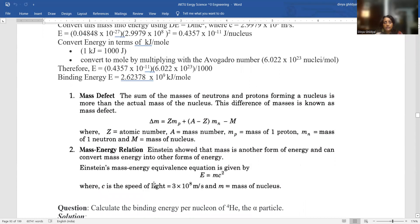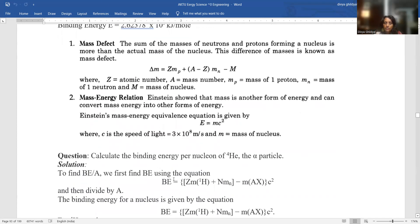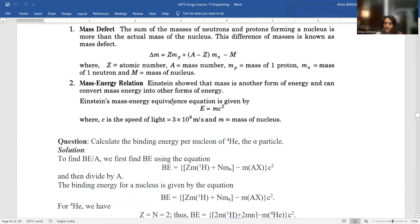Mass defect, the sum of masses of neutrons and protons forming a nucleus is more than the actual mass of the nucleus. This difference of masses is known as mass defect. The formula is del m is equal to z mp plus a minus z mn minus m where z is atomic number, a is mass number, mp is the mass of one proton, mn is the mass of one neutron and m is equal to mass of nucleus. The mass energy relationship is E equal to mc squared where c is speed of light and m is mass of nucleus.